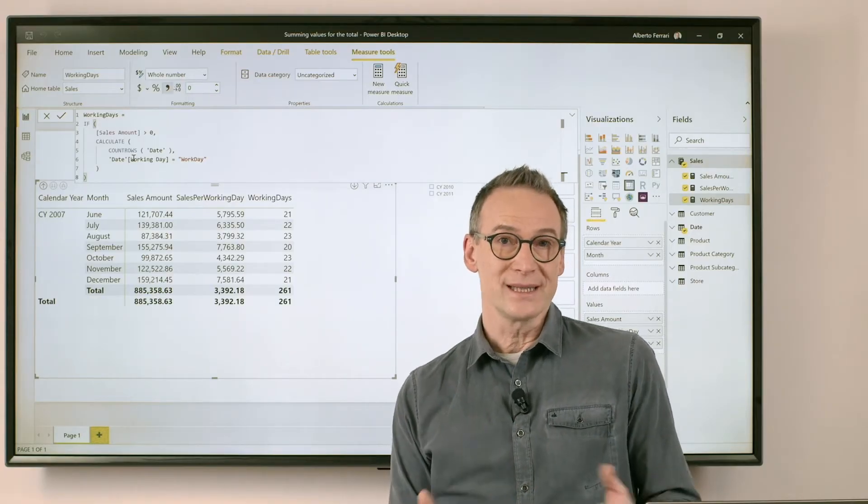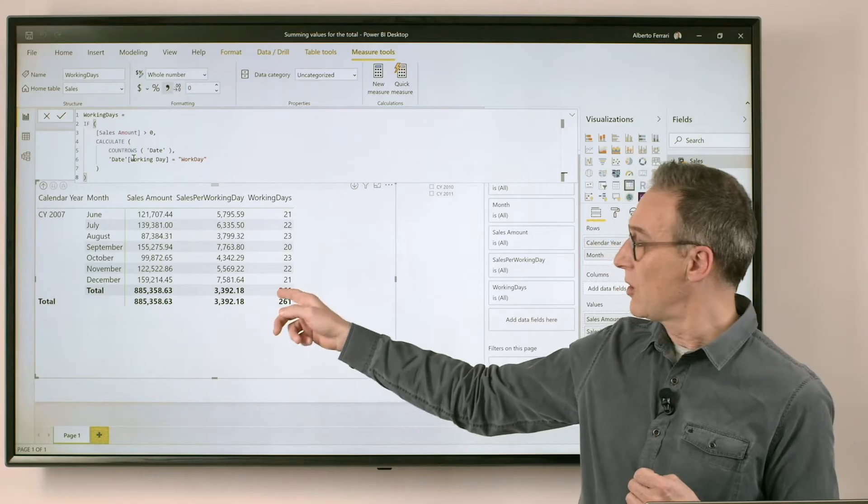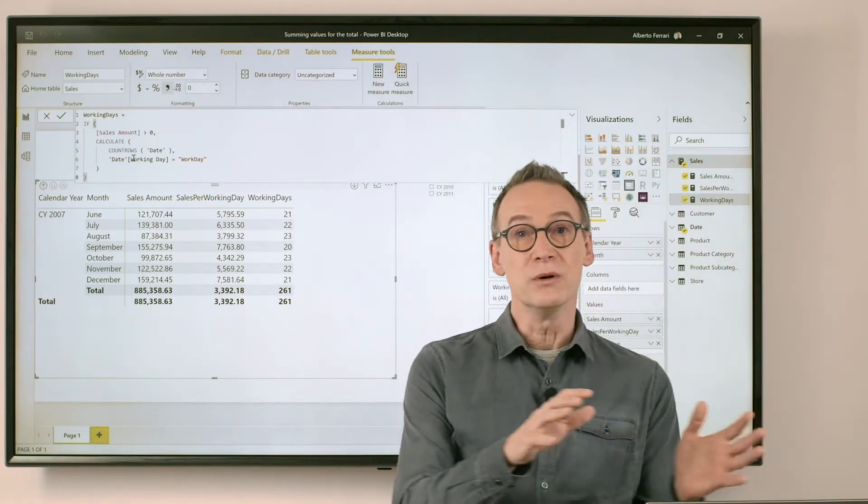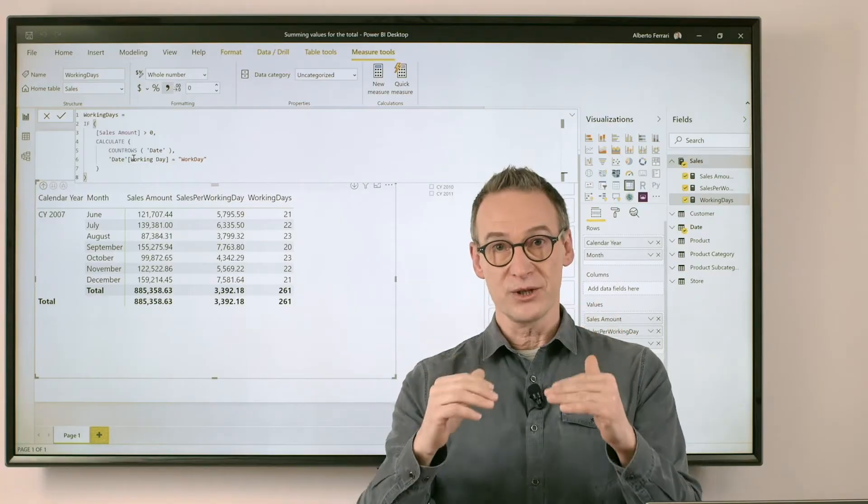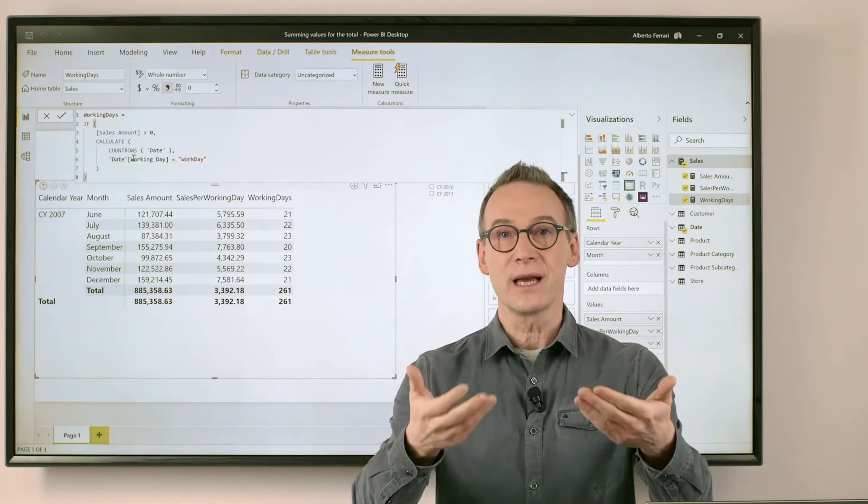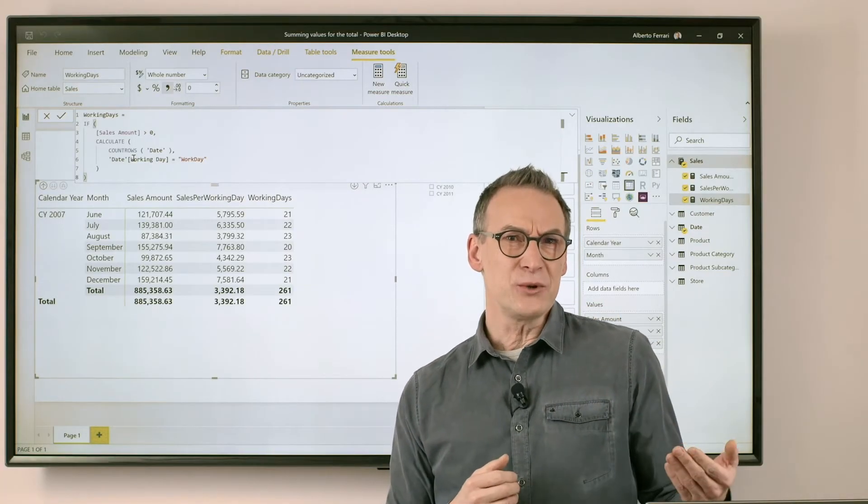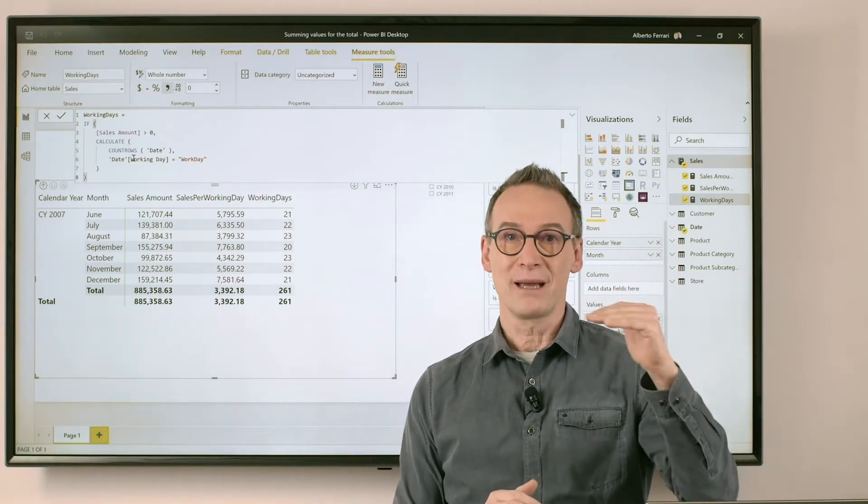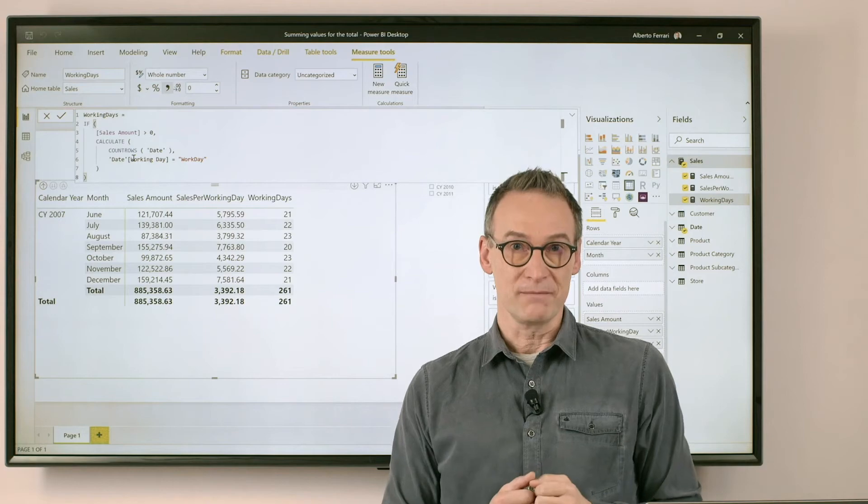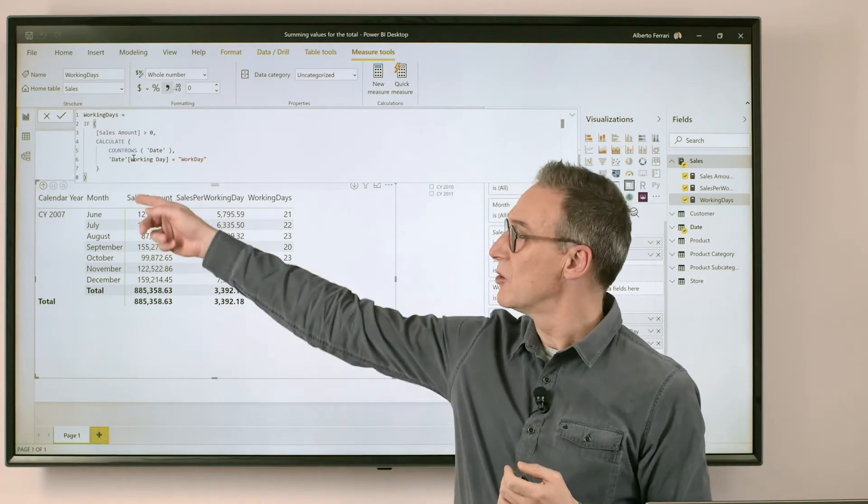So what I want to do is, instead of doing the calculation only at the total level, I want to move the calculation row by row, perform the calculation there, and then aggregate the result. What am I doing if I do an operation step by step, month by month? I'm iterating, and I'm iterating over what? Over the month.